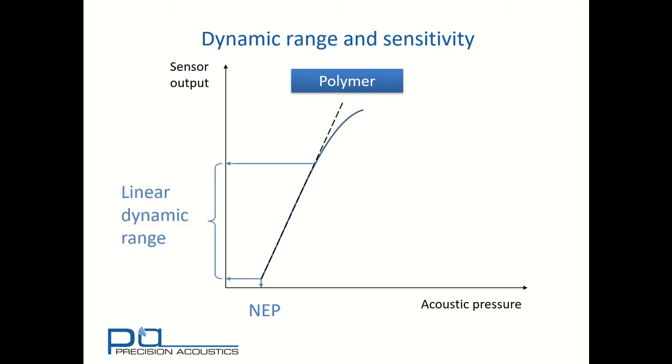Similarly, the upper limit of that linear dynamic range is shown here, which is where we start to see a deviation of the sensor output from the linear relationship between output and pressure input.